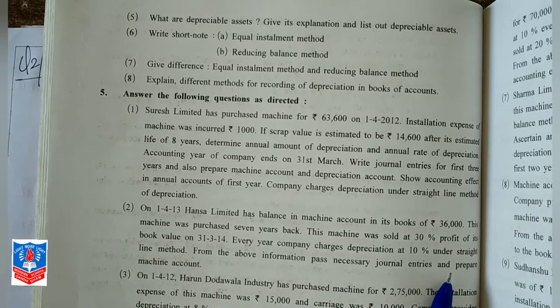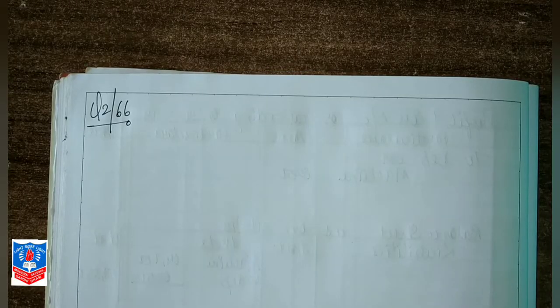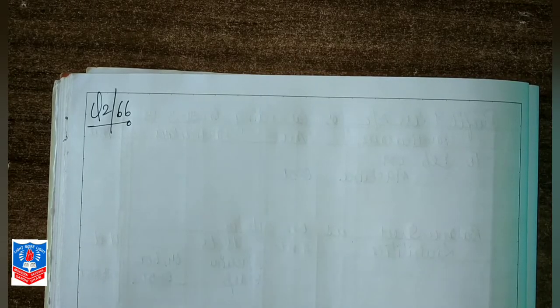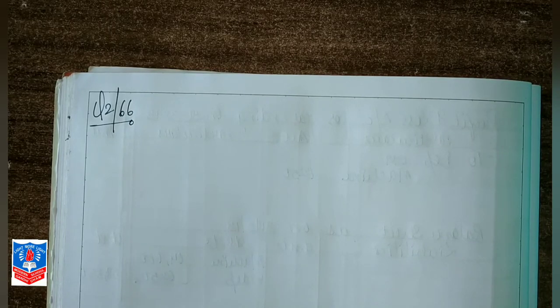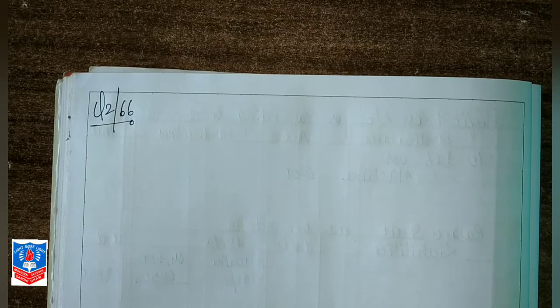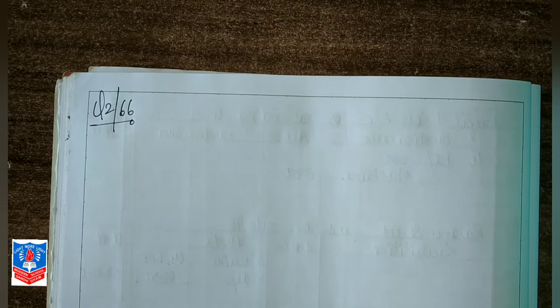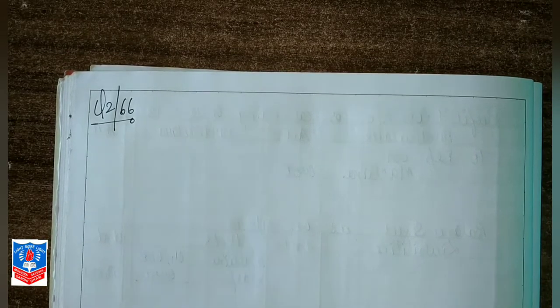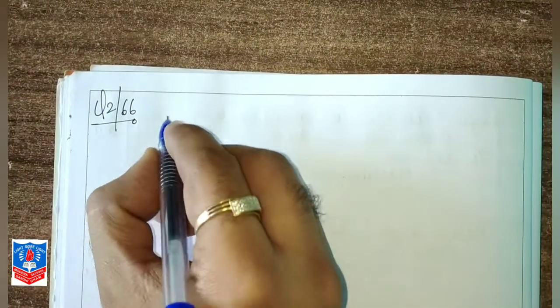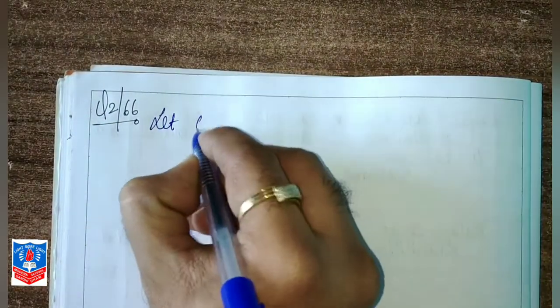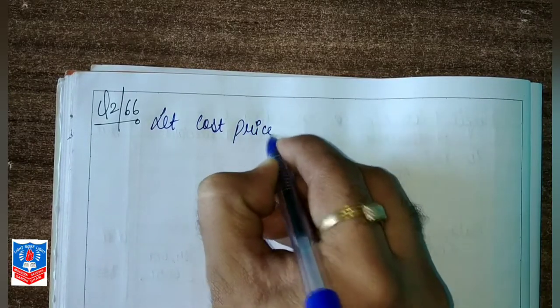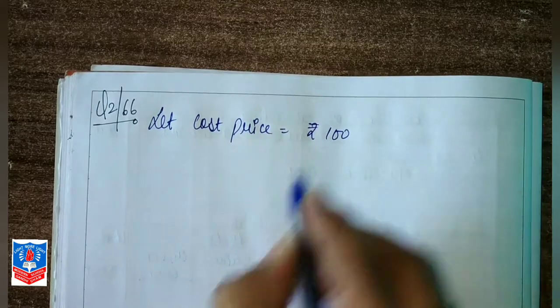Now, 36,000 is not the cost price — 36,000 is its book value. That balance figure is given to us and we have to calculate what the cost price would be for that 36,000 book value machine. Here we will do the assumption: let cost price equal rupees 100.